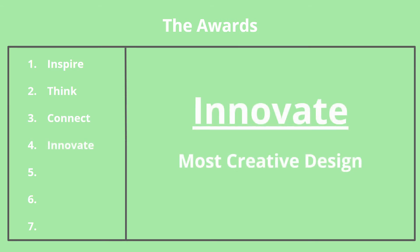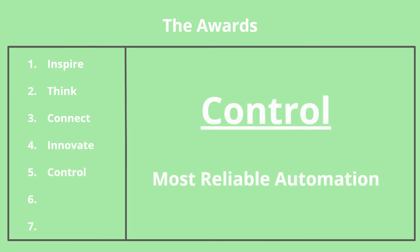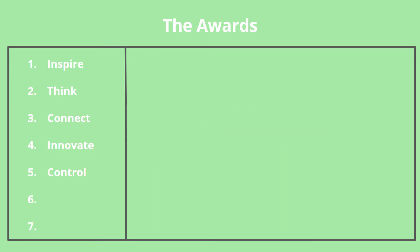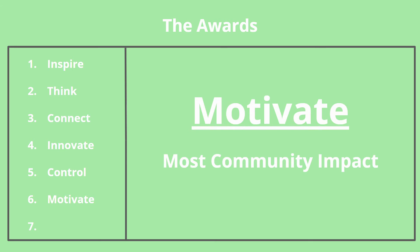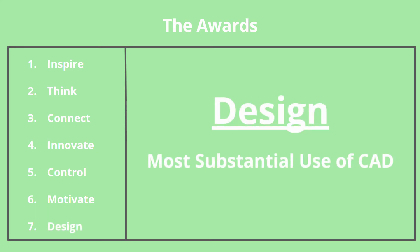In fourth is the Innovate Award, which goes to the team with the most creative design or most creative sub-component that works reliably. In fifth is the Control Award, given to the team who implements reliable control elements to improve their autonomous and tele-op control. In sixth is the Motivate Award, reserved for a team who makes extensive impact within their community and spreads FIRST as far as they can reach. Lastly, in seventh is the Design Award, which goes to the team who makes the most substantial use of CAD and strictly follows the professional engineering process.